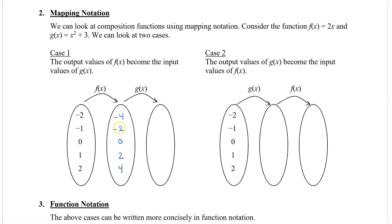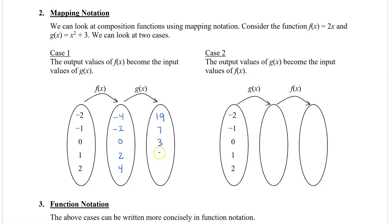Now these outputs, the f of x values, then become the input of g of x. So we're going to take negative 4 and substitute it in for x in the g of x function: negative 4 squared plus 3, which gives us 19. Negative 2 squared gives us 4 plus 3, which is 7. Continuing: 0 squared plus 3, 2 squared plus 3, and 4 squared plus 3, which gives us 19. So the output values of f of x are substituted into x for g of x to give us the final values.